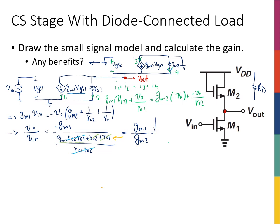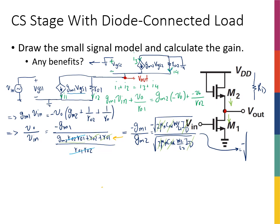Substituting the expressions for gm: gm = sqrt(2*μn*Cox*(W/L)*Id). Writing gm1/gm2 as the ratio, the mobility μn, Cox, the factor of 2, and Id all cancel because both transistors carry the same drain current. The gain reduces to simply the ratio of their geometries: Av = -sqrt((W1/L1) / (W2/L2)).